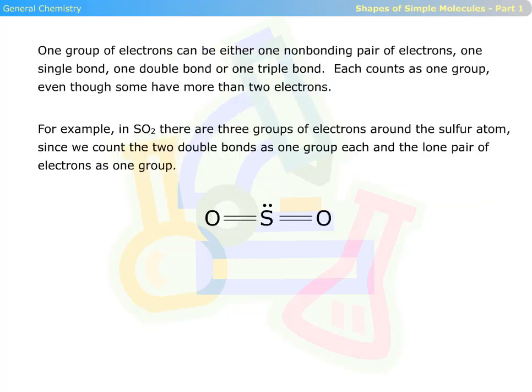One group of electrons can be either one non-bonding pair of electrons, one single bond, one double bond, or one triple bond. Each counts as one group, even though some have more than two electrons. For example, in sulfur dioxide, there are three groups of electrons around the sulfur atom, since we count the two double bonds as one group each and the lone pair of electrons as one group.